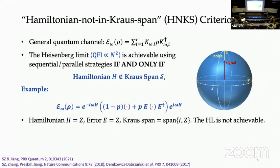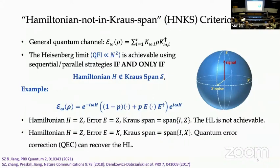I'll stick with a simple single-qubit example throughout this talk. The Hamiltonian is the Pauli Z operator, so the channel is a rotation by angle omega (the unknown parameter). If the noise is also Pauli Z (dephasing), the HNKS condition fails — the Hamiltonian is inside the Kraus span — so the Heisenberg limit is not achievable. On the other hand, if the noise is bit-flip, the Hamiltonian is not inside the Kraus span, so you can use error correction to recover the Heisenberg limit.